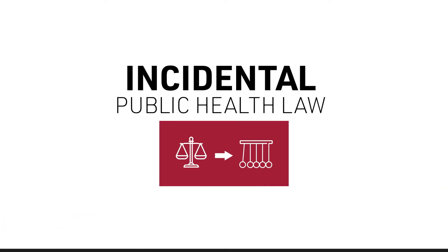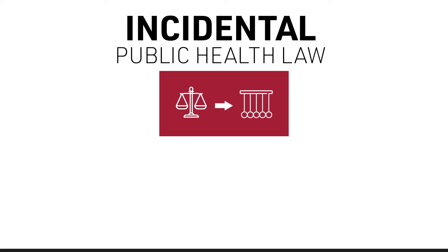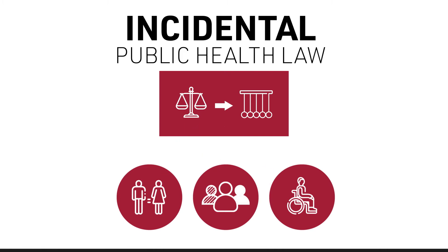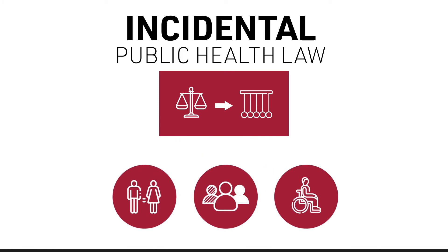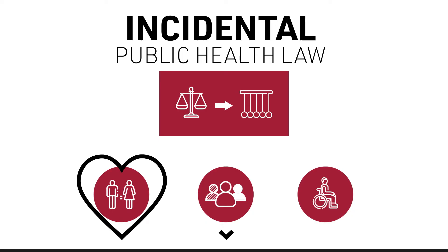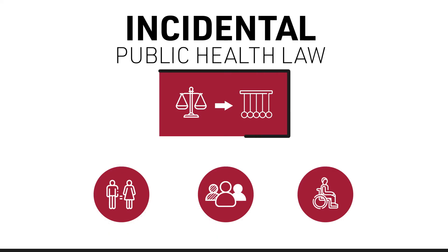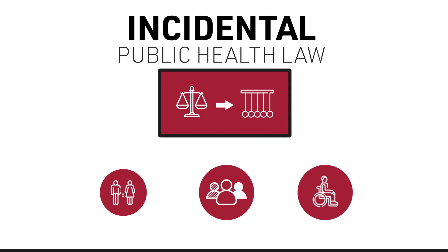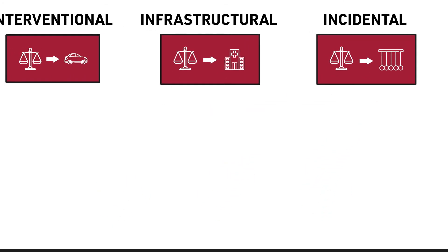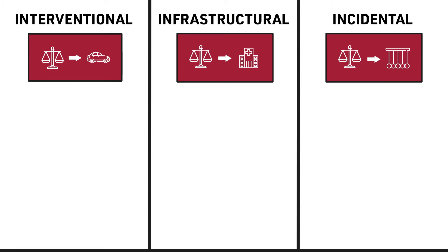The third and biggest category is what we call incidental public health law. Take civil rights law — law that protects us from discrimination in the workplace because of our gender, our race, or because of a disability. You can see that as just being about equality. But people who work in workplaces where they're respected, where stress levels are kept low, and where they have a chance to take control of their work seem to have better health outcomes. Workplace hierarchy, happiness, and relationships turn out to be very important to people's long-term health. These laws aren't intended to protect public health, but incidentally civil rights law has that effect.